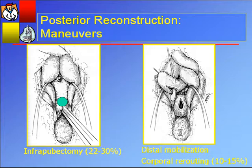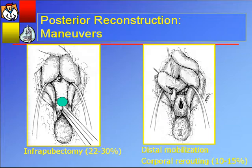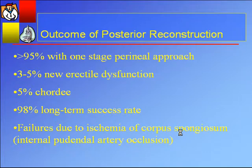If that doesn't work because of proximity, you can reroute the urethra around the corpus spongiosum to achieve extra centimeters of length. Posterior urethral reconstruction: about 95% one-stage perineal approach, 3 to 5% incidence of new erectile dysfunction, 5% of patients will have chordee. The long-term success rate is excellent. Failures are probably due to ischemia of the distal urethra because the proximal segment is transected.